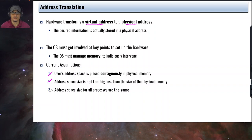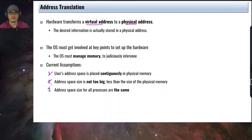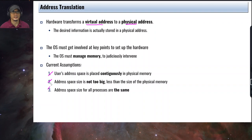The third assumption is that the address space size for all processes is the same. So, for example, if we allocate 4 kilobytes or 16 kilobytes for the address space of a process, all processes in the system will have that same size.